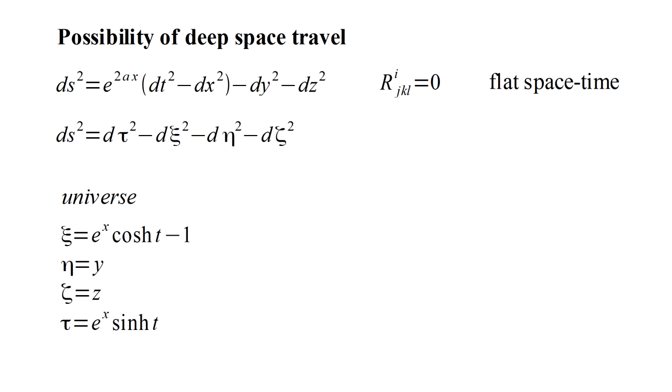Now, if a spaceship accelerated at 9.8 meters per second per second, the occupants would experience the equivalent of Earth's gravitational field. It would be business as usual for the astronauts. As in special relativity, nothing changes for the two spatial coordinates that are not in the direction of motion. The interesting stuff happens between time and the coordinate in the direction of motion, t and x in accelerated coordinates, and psi and tau in universe coordinates.